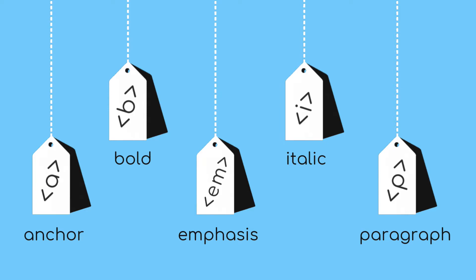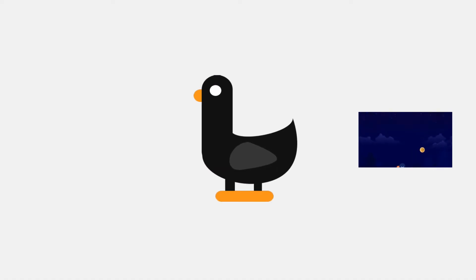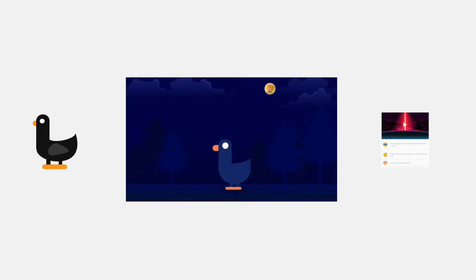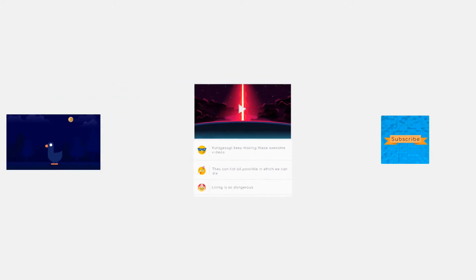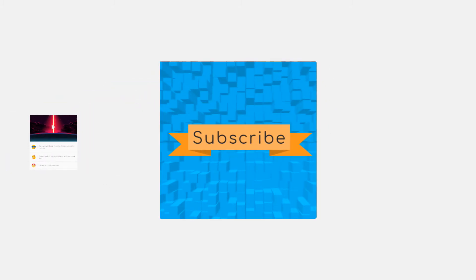HTML consists of predefined text enclosed in angled brackets. Each tag represents a different set and type of information which makes up the webpage. And with these tags, you can add anything on a webpage, from images to videos to forms and links, all at once.